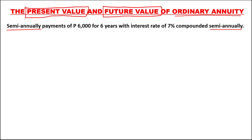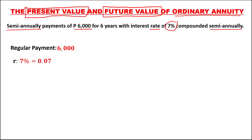First, we need to list all the given values. The regular payment is 6,000 pesos. The rate is 7%, or 0.07 in decimal. The time is 6 years. For M, the compounding period, since it is compounded semi-annually, M is equal to 2.